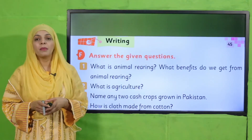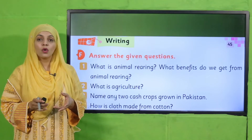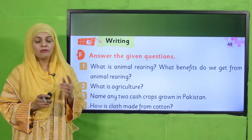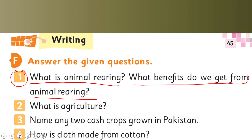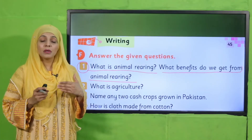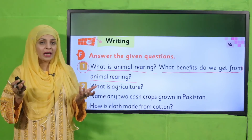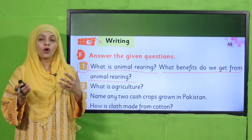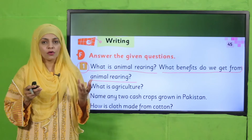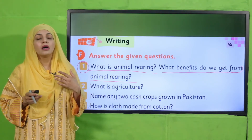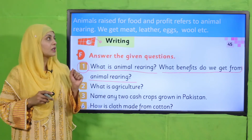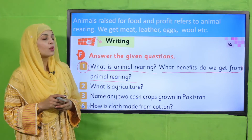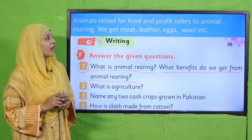Now let's quickly move forward towards the practice. Open page number 45 and also take out your notebooks. We will do question number one today: What is animal rearing, and what benefits do we get from animal rearing? Animals raised for food and profit refers to animal rearing or livestock. We get different products from them like meat, eggs, wool, leather, and more. Note down this answer in your notebooks.